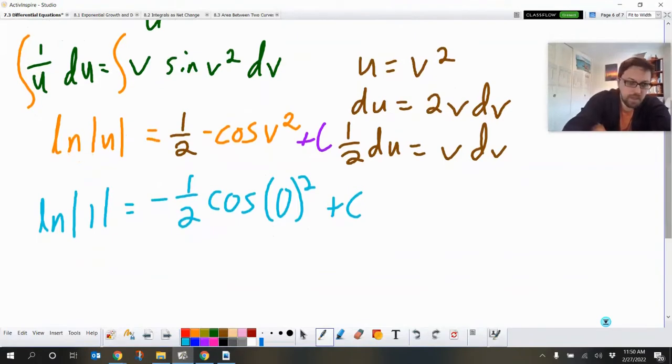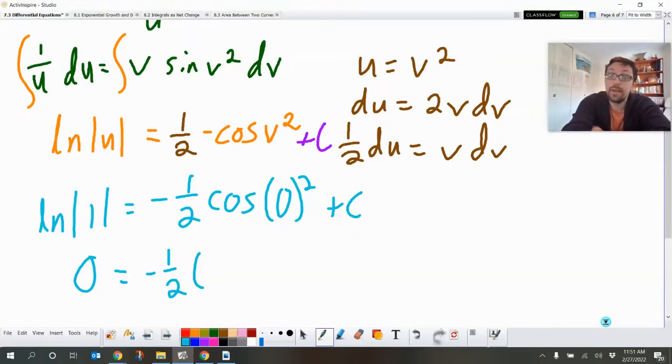Okay. So the ln of 1 is 0 equals negative one-half. The cosine of 0 is 1. 0 squared, 0. And then the cosine of 0 is 1 plus c. So this means that c is going to equal, let's see, that's negative a half. Bring it to the other side. c is one-half.